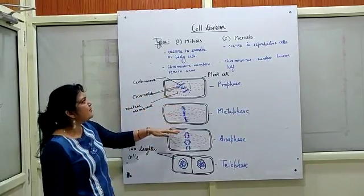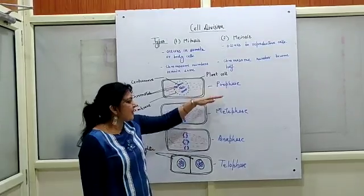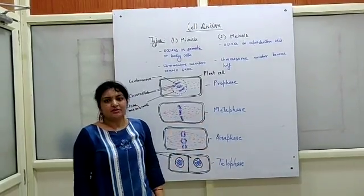There are several steps in mitosis. They are known as prophase, metaphase, anaphase, and telophase.